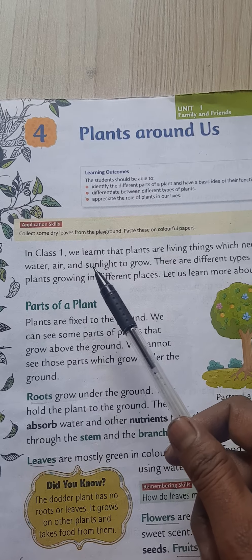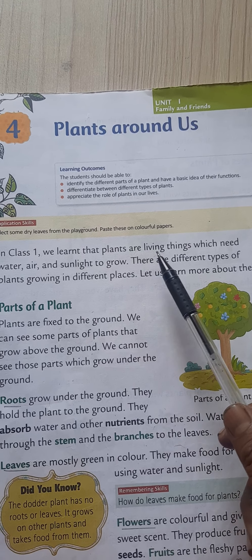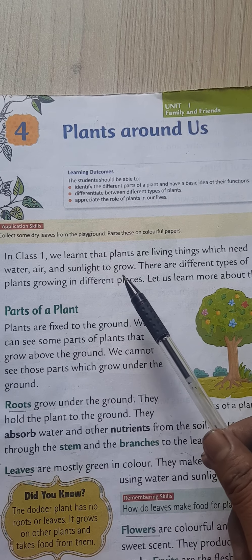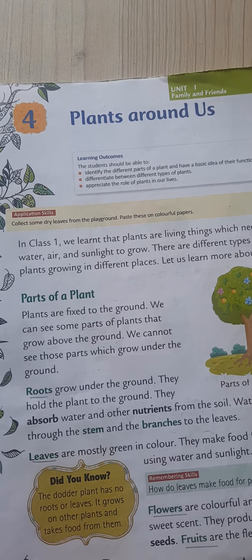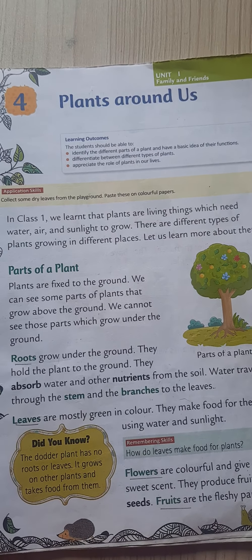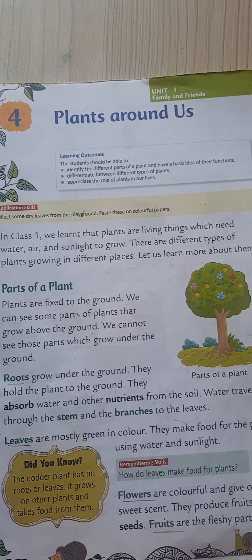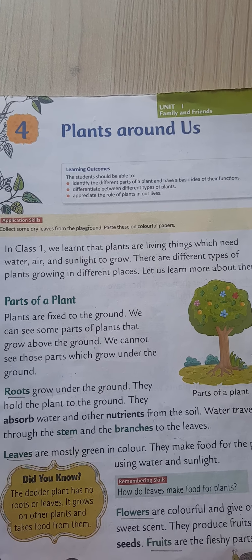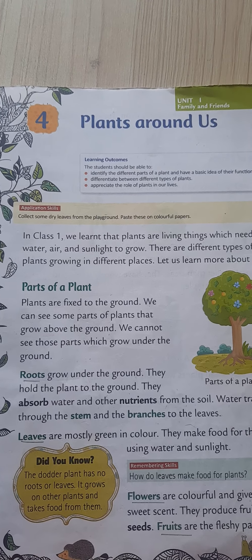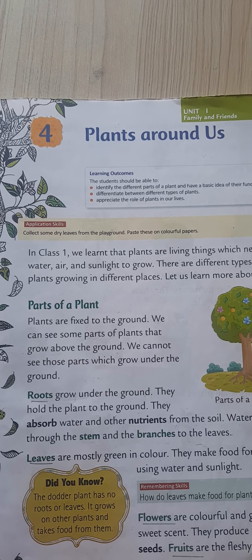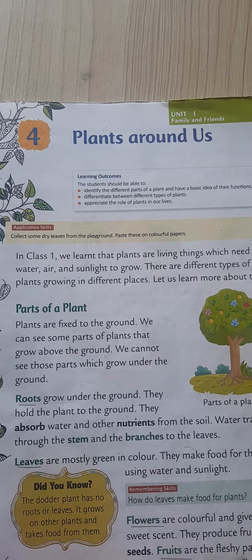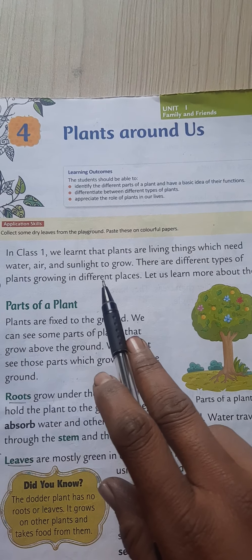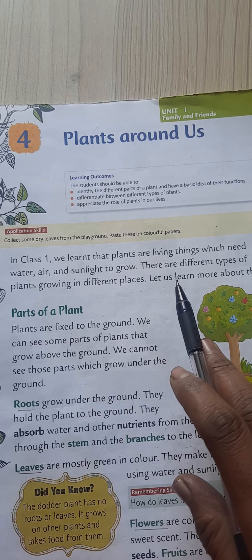In class 1, we learned that plants are living things which need water, air and sunlight to grow. As we have already learned in standard first, plants are living things. They also need water, air and sunlight to grow.